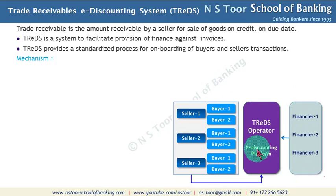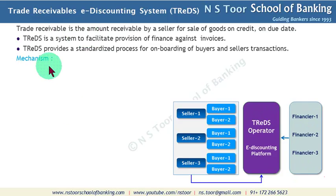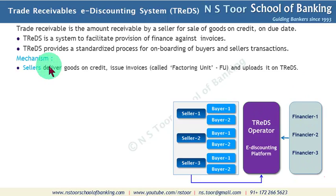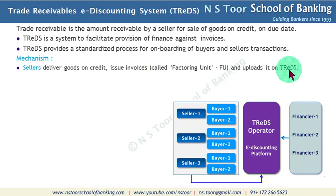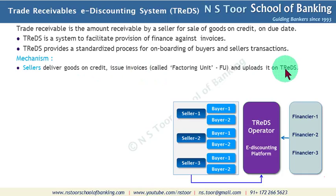This provides e-discounting of these receivables. The seller delivers goods on credit, issues an invoice, and uploads it on TReDS. This invoice that is issued and uploaded on the TReDS system is called a factoring unit.